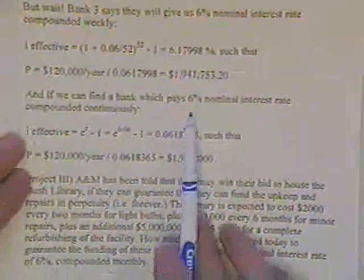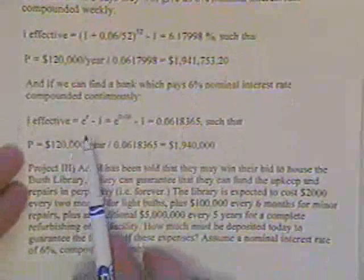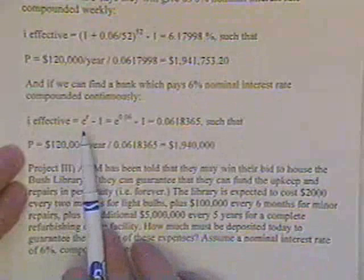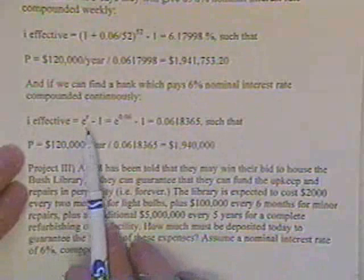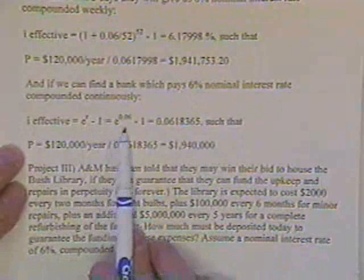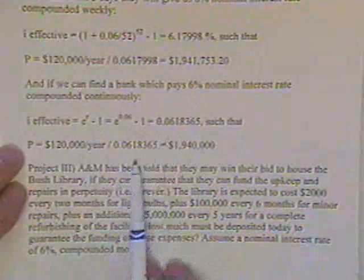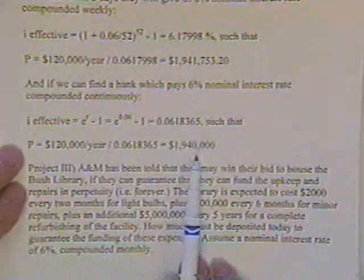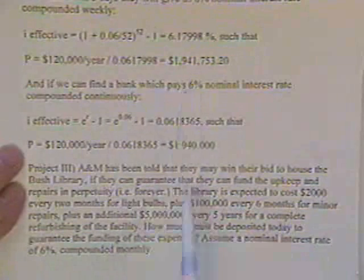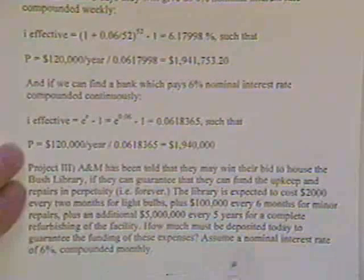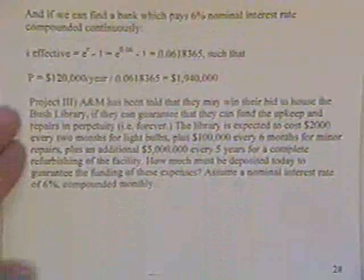And if we go to a bank that pays us continuously, I find the effective interest rate from the equation in the reference manual, E to the R minus 1, E to the 0.06 minus 1, and now I only need $1.94 million. Save about $1,000 over this guy's offer.